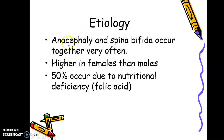Aetiology: Anencephaly and spina bifida occur together very often. Most commonly hydrocephalus as well as spina bifida occur together. Arnold-Chiari malformation, which we mentioned in hydrocephalus, always comes along with spina bifida. Females are more susceptible than males. 50% of cases occur due to nutritional deficiency, mainly folic acid deficiency.